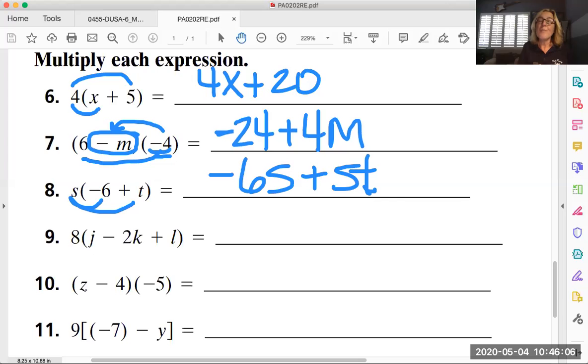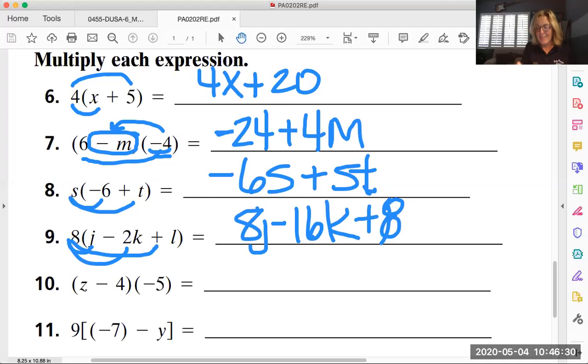Okay now the group might have more than two things going on. In this case number nine it does. It's eight times the quantity of j minus 2k plus l. Same thing though. Eight goes to everything. So we have 8j. We have eight times negative 2k which would be negative 16k and then we have 8l.